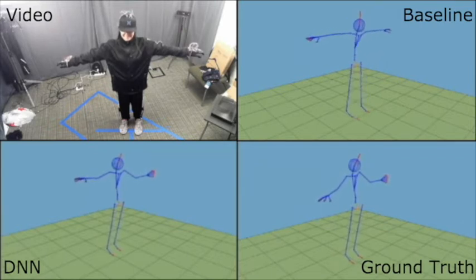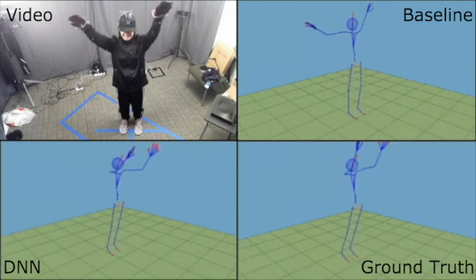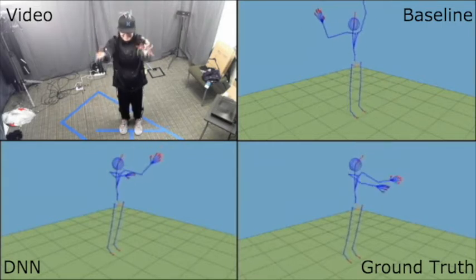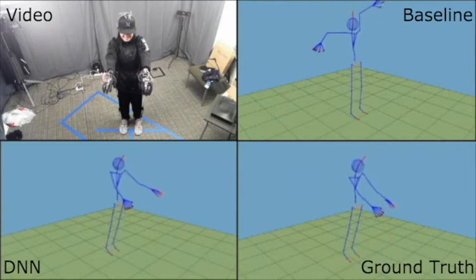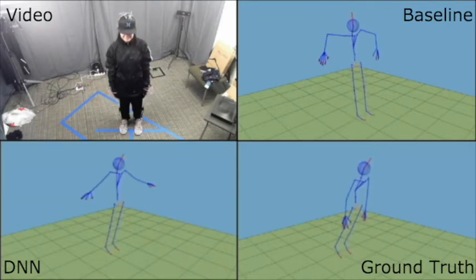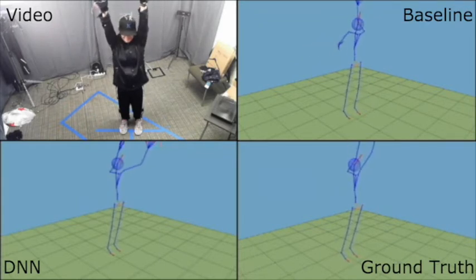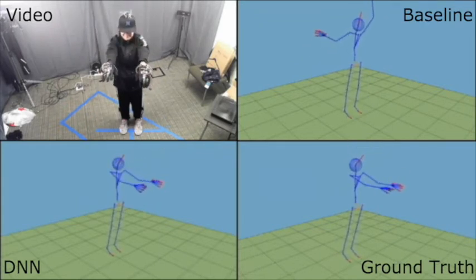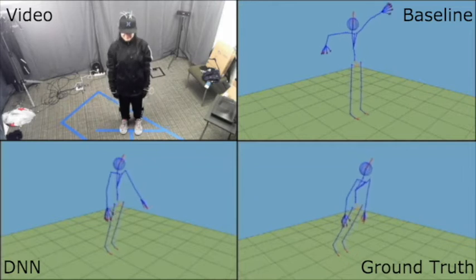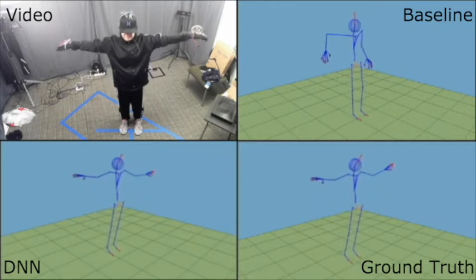Since both the baseline and DNN tracker assume zero translation and rotation of the hip, we manually fix the hip of the ground truth tracker so that they could be better aligned. This is why the legs are moving a little bit in a not quite natural manner in the ground truth, since it is the hip of the subject which is actually translating and rotating.